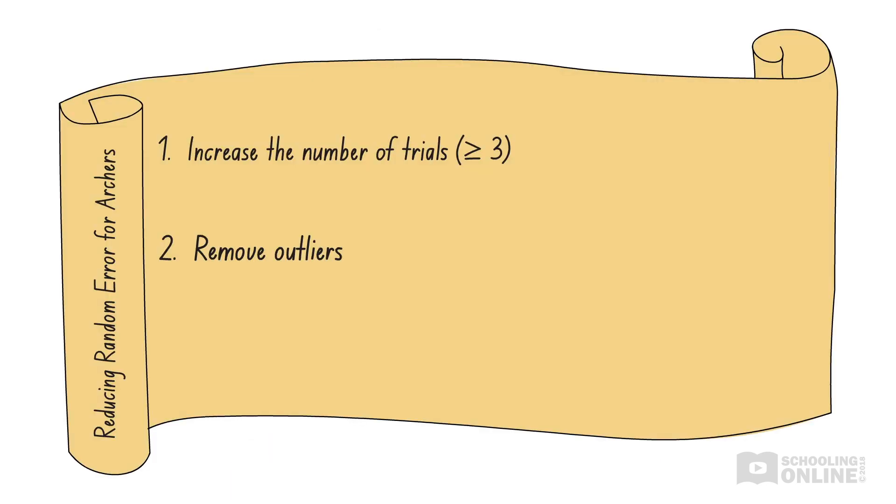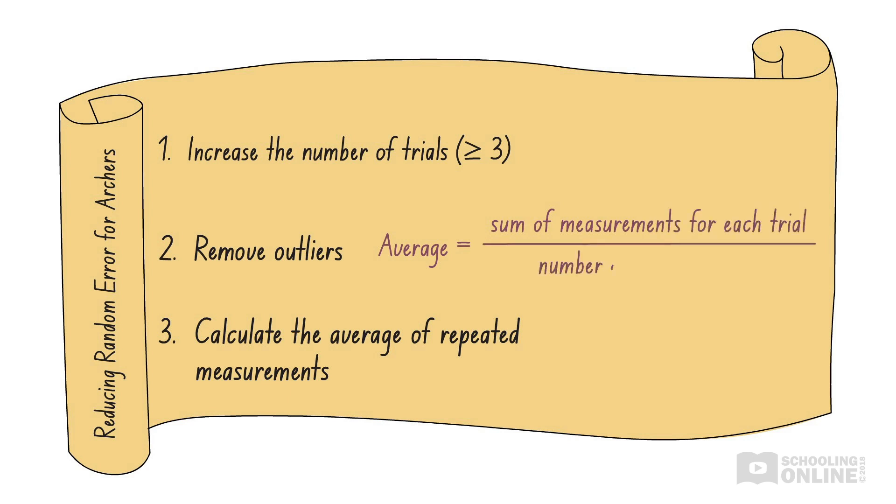This brings us to the third method of reducing the effects of random error, which is to calculate the average of repeated measurements. The average is calculated by taking the sum of all the measurements for each trial and dividing by the total number of measurements. When we average our results, the values that are too large will cancel out the effect of the values that are too small. Therefore, any variation caused by random errors will be smoothed out, giving a more reliable result. The more data we collect, the more reliable our average becomes.